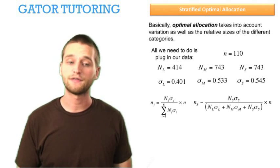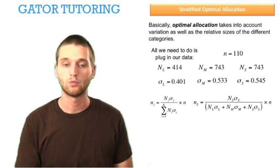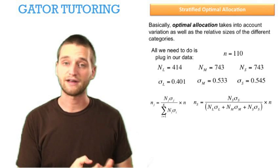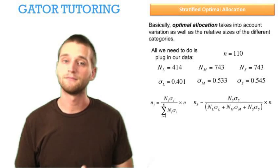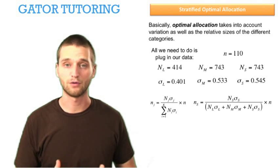and so we know in the numerator, since this is our target, the small category, we put big N s, the size of the old population of the small category, times the old standard deviation of the small category. Only the small numbers go in the numerator.